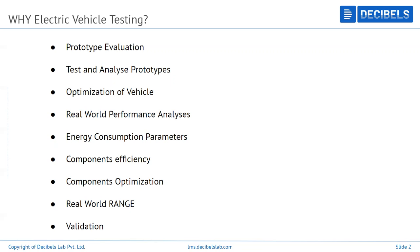The first and most important point is prototype evaluation. Whenever you have a product, a vehicle, or a project in mind, you need to build a prototype to see how it actually works. The expected outcomes at the start of your project won't match 100% when you build the first prototype — there will be many evaluations and iterations. To evaluate where your prototype stands, we go for vehicle testing, to test and analyze all prototypes and iterations.